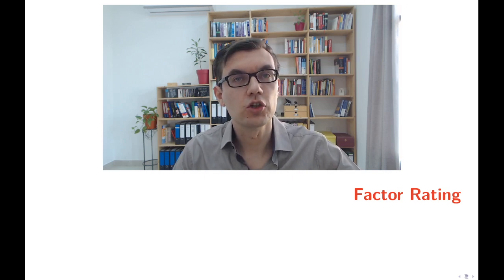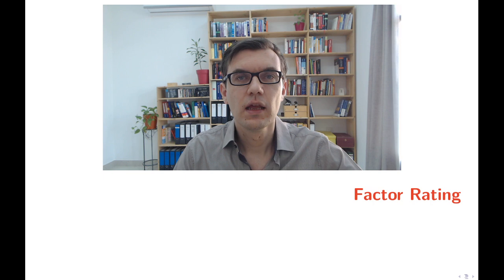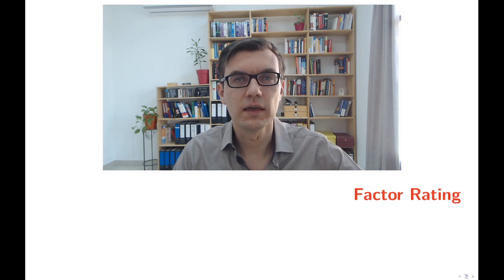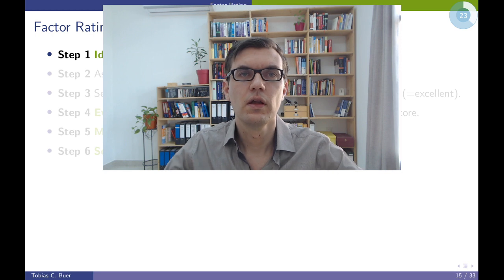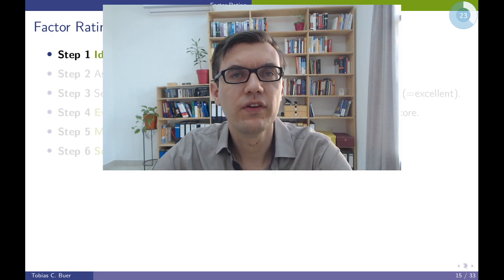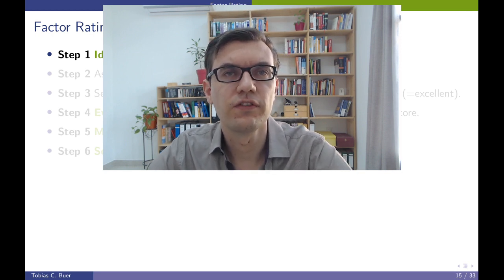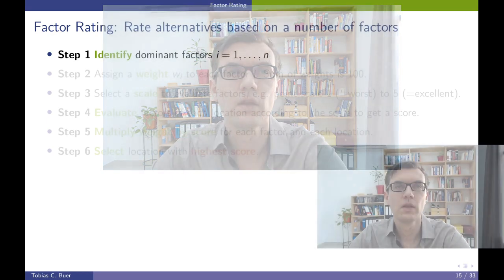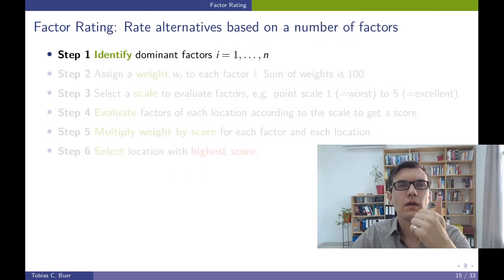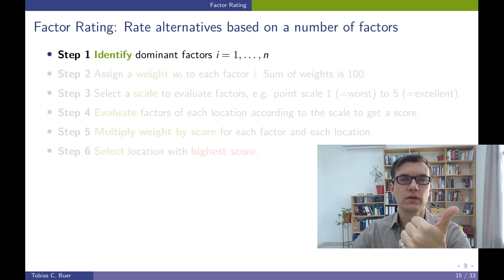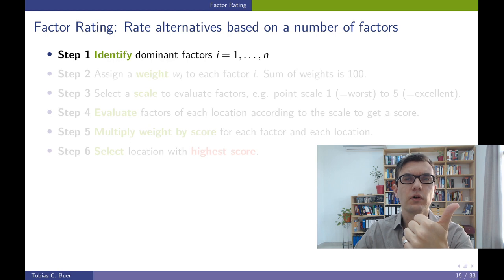The first method that should support us in making a location decision is called the Factor Rating Method. We have a 7-step procedure for the Factor Rating Method. First of all, we identify all the relevant factors — we decide which are the important things about our locations.